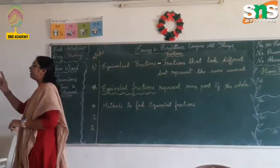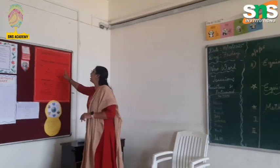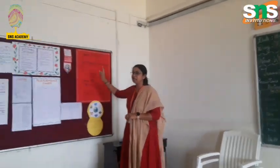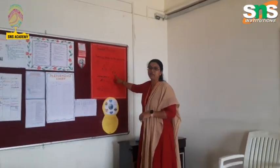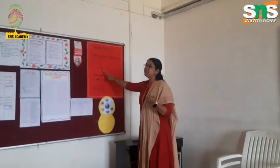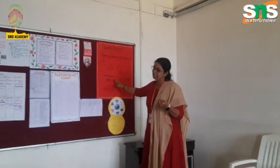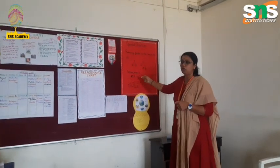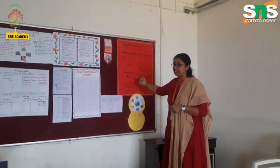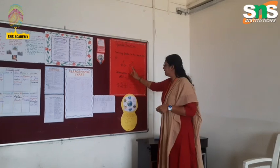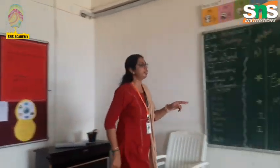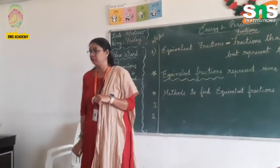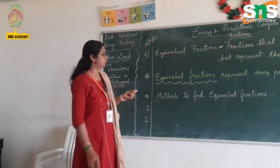I told you to make the chart. This is the reducing fraction. Reducing the fraction is making it as equivalent. Did you complete this factor 3 method, children? Yes ma'am. Do you understand how to do it and reduce the fractions? Yes ma'am. Here we are going to see another 2 methods — again we will write in the chart and complete it.